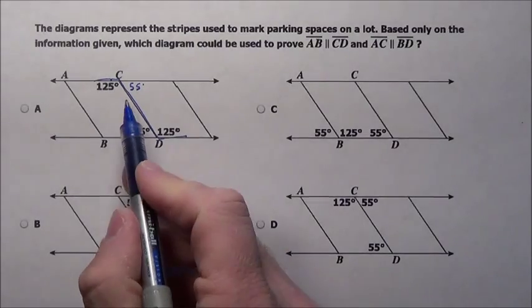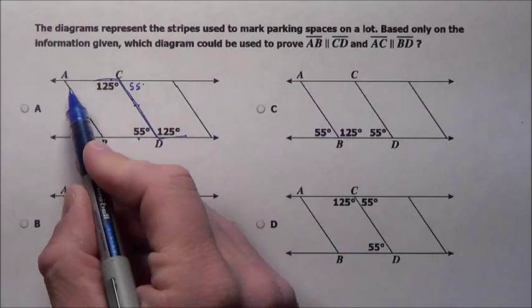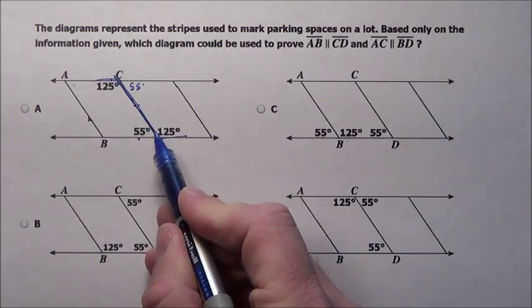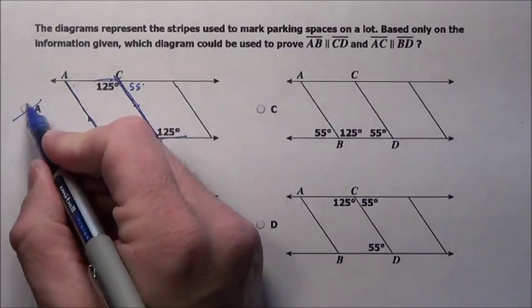But does it prove at all that this and this are parallel? We have no way of telling what the measurements over here are. We have no relationship to this line's measurements and that guy, he doesn't even have anything on it. So choice A is out.